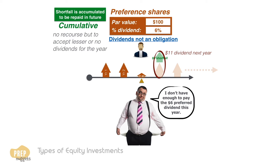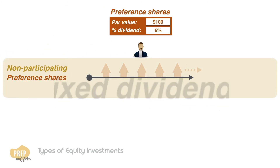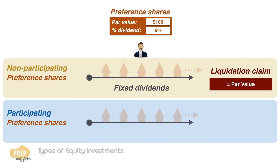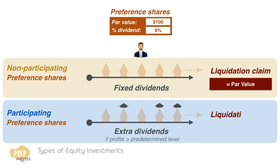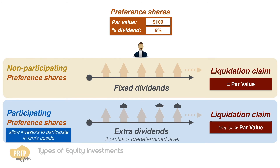Preference shares can also be participating or non-participating. Non-participating preference shares have fixed dividends, and the claim in the event of liquidation is equal to the par value. Participating preference shares receive extra dividends if the firm's profits exceed a predetermined level and may receive a value greater than par value if the firm is liquidated. This allows investors to participate in the potential upside of the firm. Smaller and riskier firms often issue such securities to make their offering more compelling to investors.